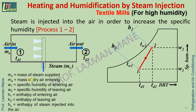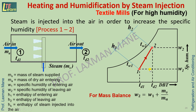For steam injection: Ms is the mass of steam, Ma is the mass of dry air, W1 and W2 are specific humidity, H1 and H2 are enthalpy, and Hs is the enthalpy of steam. The mass balance gives: W2 = W1 + (Ms / Ma). The heat balance equation is: H2 = H1 + (Ms / Ma) × Hs.